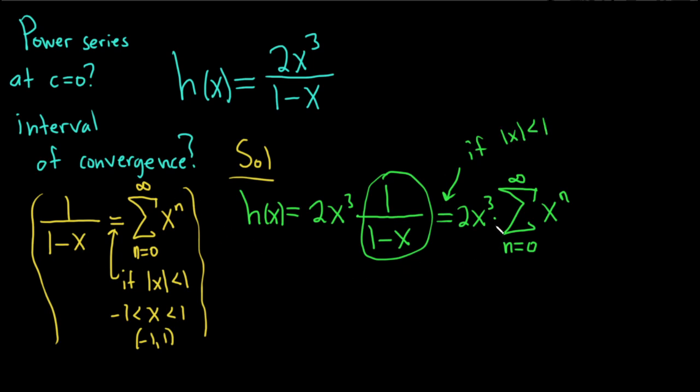Now we can take the 2x cubed and distribute it through the sum. So this is h of x. And this is equal to, you can just bring it inside the sum. So we have the infinite sum as n runs from 0 to infinity. This is 2x cubed times x to the n.